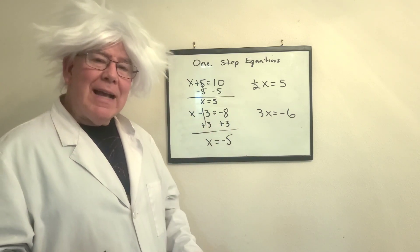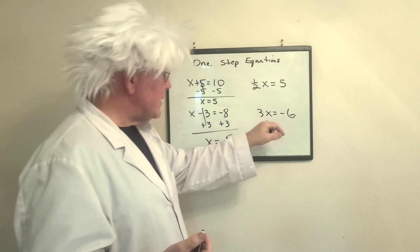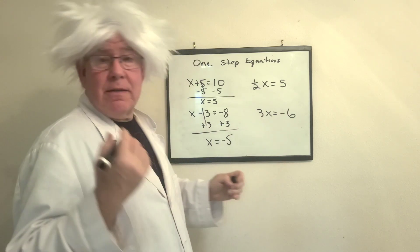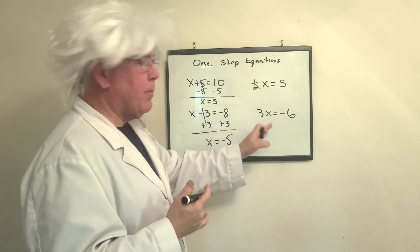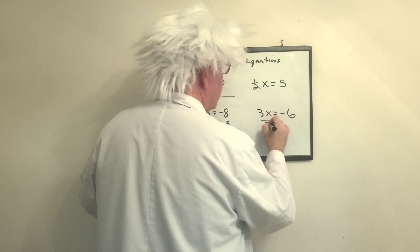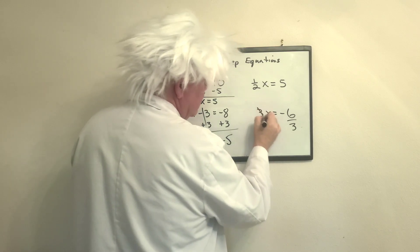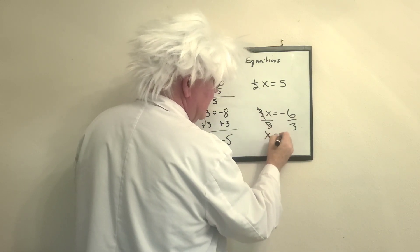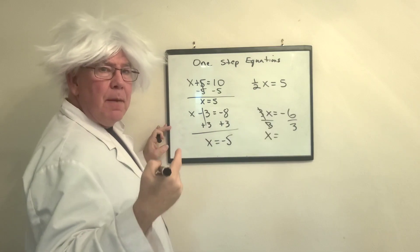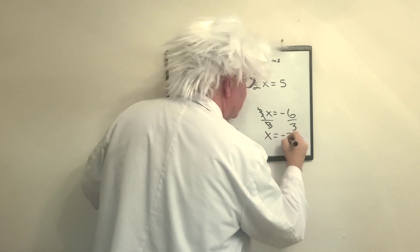3x equals negative 6. What times 3 gives you negative 6? Well, the opposite operation of multiplication is division. We're going to divide both sides by 3. This becomes 1. 1 times x is x, it's a negative. A negative divided by positive is negative. So this is negative 2.